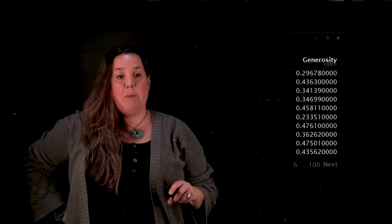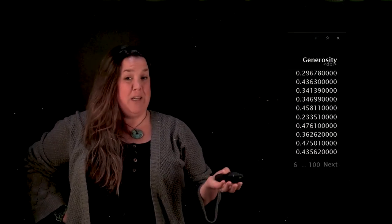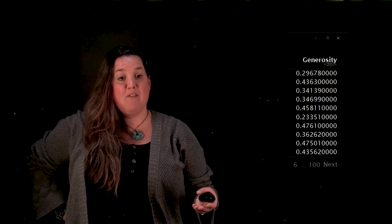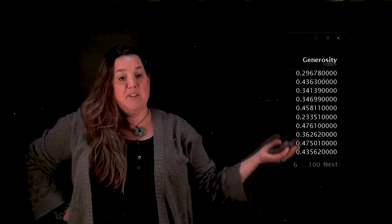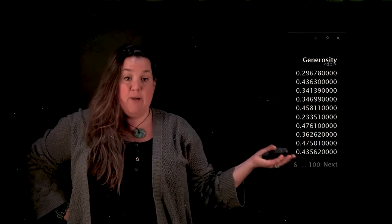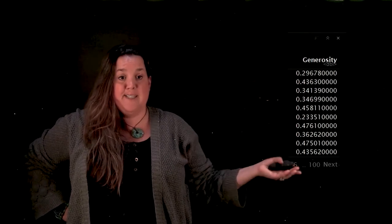So first of all, remember that with the five number summary, you have to have the data in order. That's a necessity for actually finding the five number summary. This is the way the data looks when I have it entered into R. You can see that it's not in order.